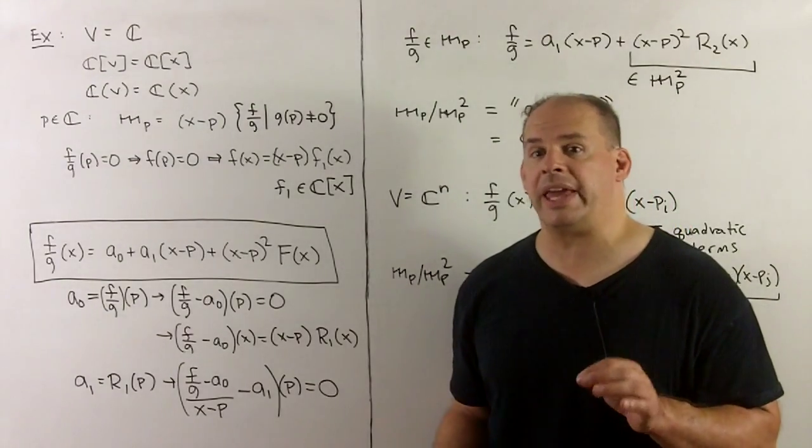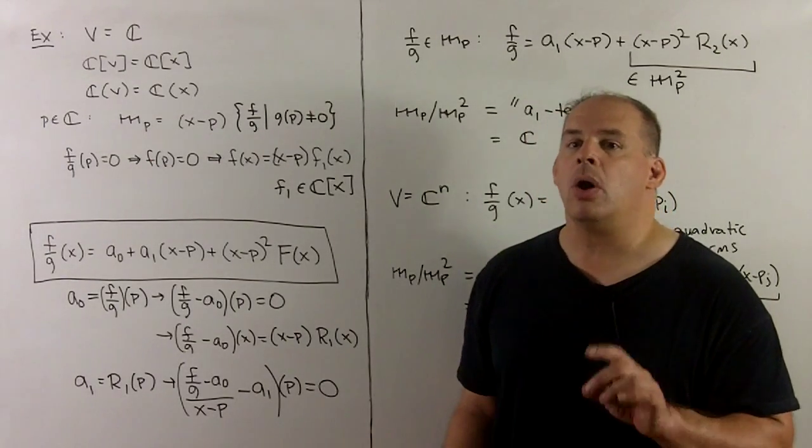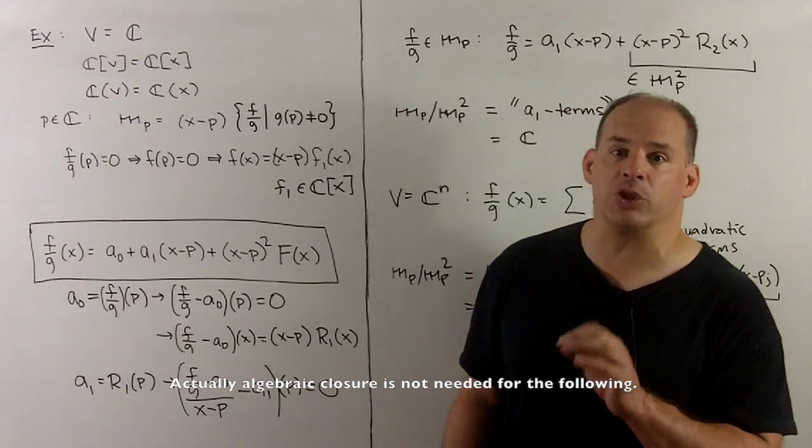Our intuition comes from the case of the complex numbers. We use Taylor polynomials only. Instead of using derivatives, we develop using algebraic closure.